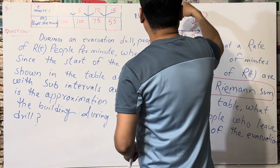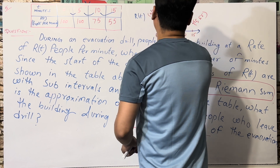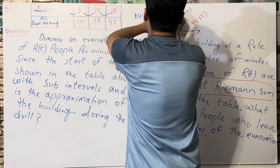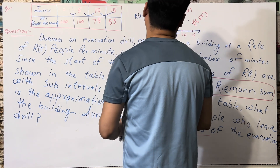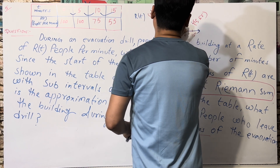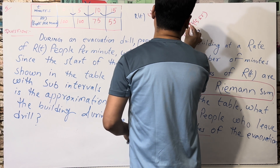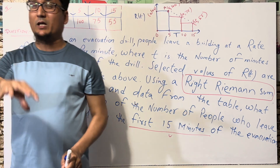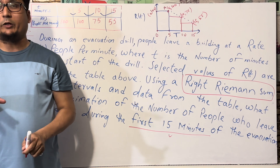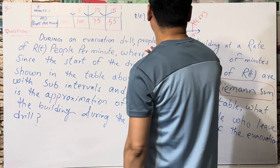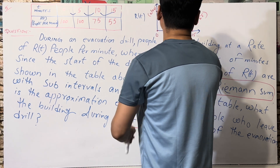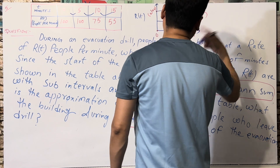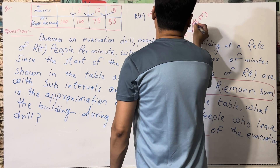Now, how do we find the area? We are going to make rectangles. The first rectangle covers the interval from zero to five - and here we use the right side of the interval. This is a right Riemann sum, so for each rectangle, you take the right endpoint value, not the left. The width of each rectangle is constant at five minutes. So we have the first rectangle, second rectangle, and third rectangle, each with width five.